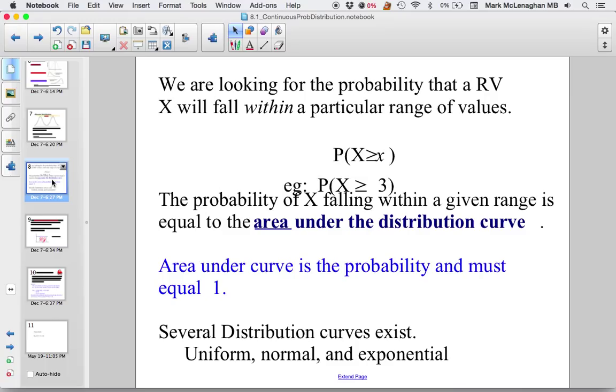We're looking at the probability of a random variable X to fall within a particular range of values. Instead of looking at a specific value, we look at a range of values. The probability that X falls within a given range equals the area under the distribution curve. We'll give you the formula to figure out what that area is. The area under the curve is a probability and obviously must equal 1 if we add them all together.